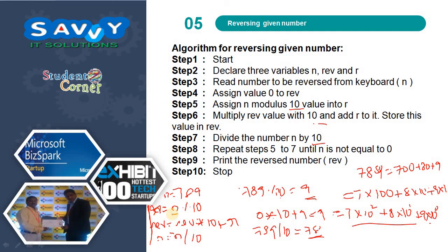For this, r, n and reverse are the variables. We need to read the value of n. Assign value of reverse to 0. Assign n modulo 10 value into r. What exactly I am doing is r equals n mod 10. Next, multiply reverse value with 10 and add r to it. Store this value in reverse again. Divide the number n by 10. Repeat step 5 to 7 until n is not equal to 0. Print the reverse automatically, we will get the answer. Means, this n will become 0. Now it is 78. In the next step, it will become 7. In the next step, n will become 0. So automatically the process will be stopped. Thank you.